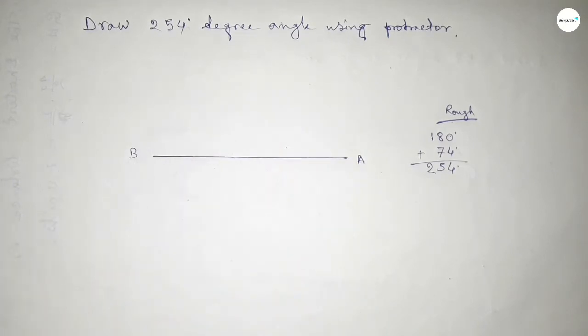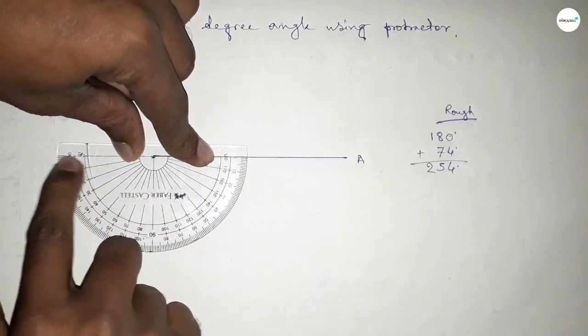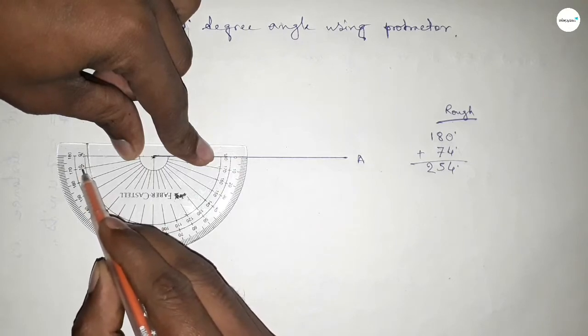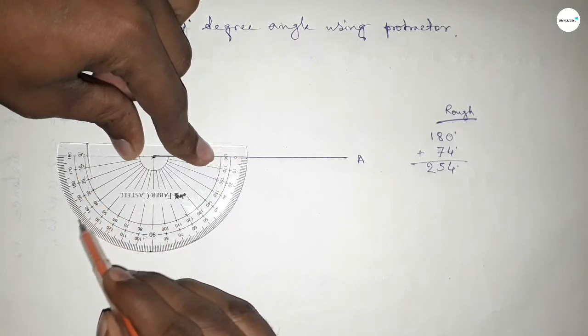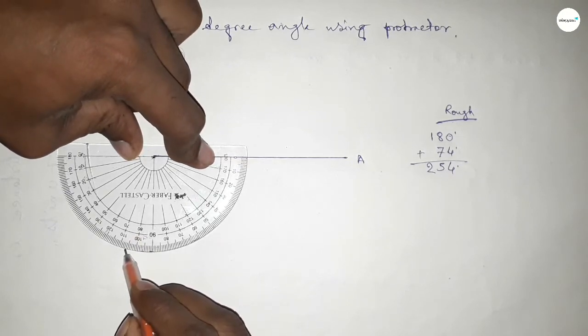Putting the protractor on the point B and counting angle, so this is 180 degree angle. Now counting 74 degree: 0, 10, 20, 30, 40, 50, 60, 70, 71, 72, 73, and this is 74 degree angle.